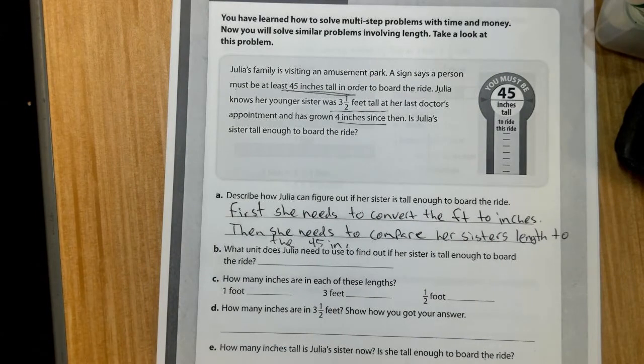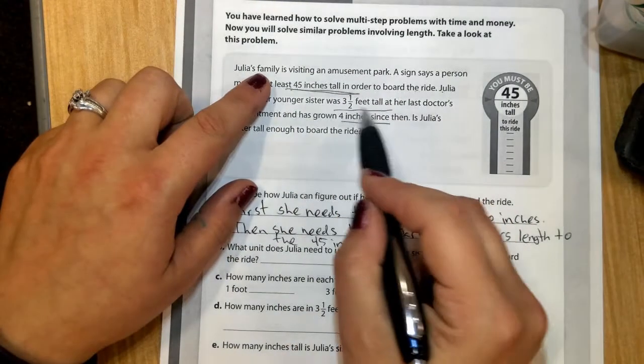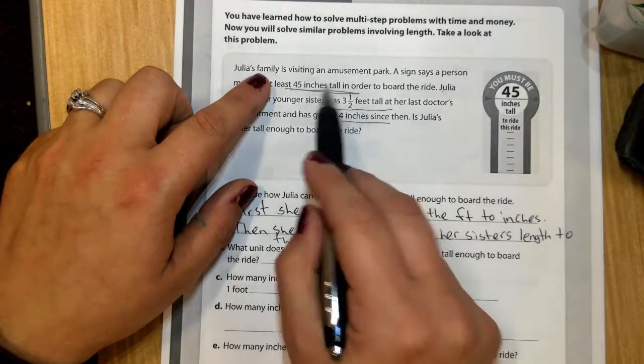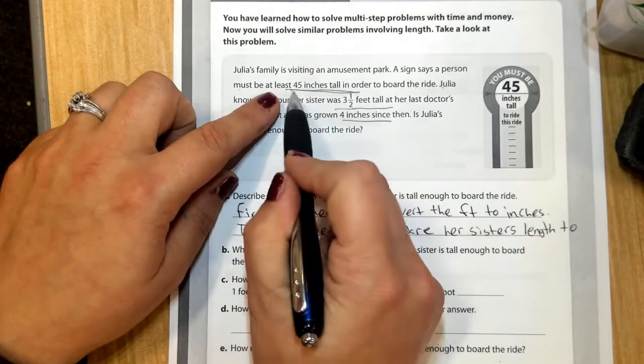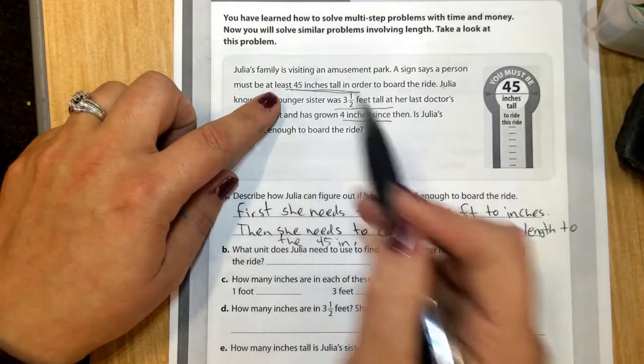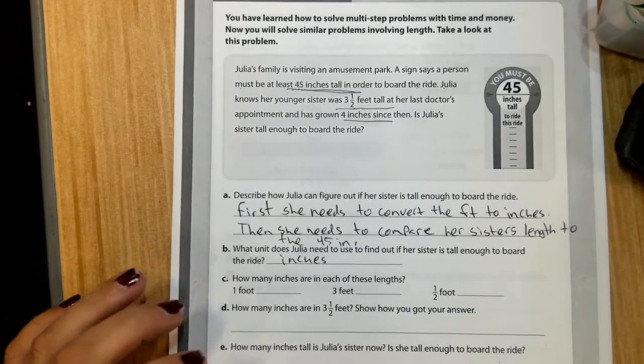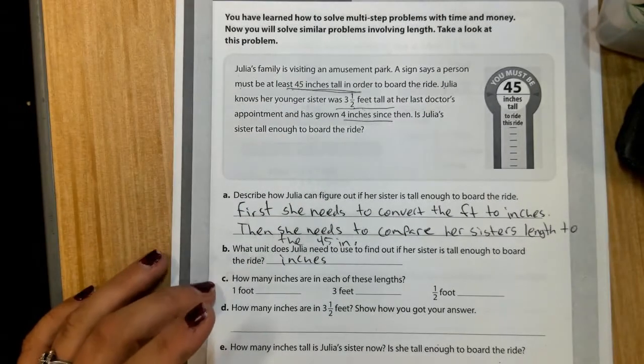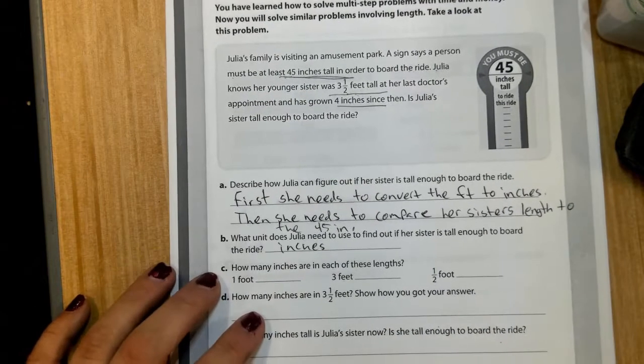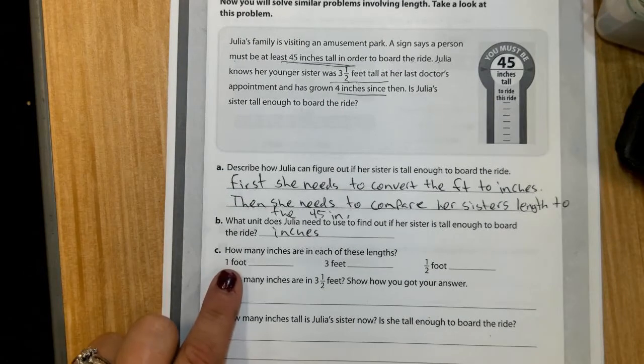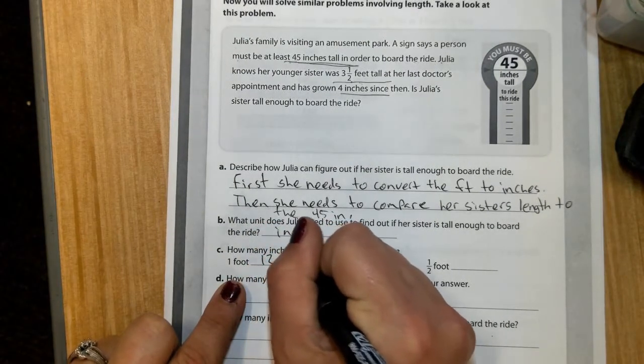B says what unit does Julia need to use to find out if her sister is tall enough to board the ride? Well, we already said that. We need to convert these feet into inches because we can't compare two different units of measurement. Since our comparison is in inches, we need to change this to inches.